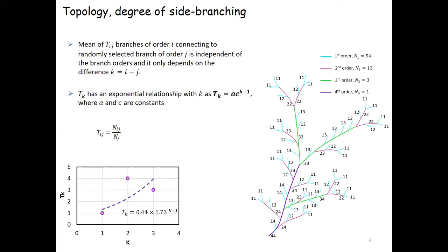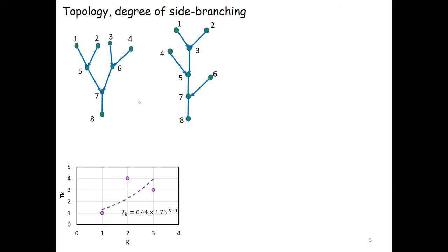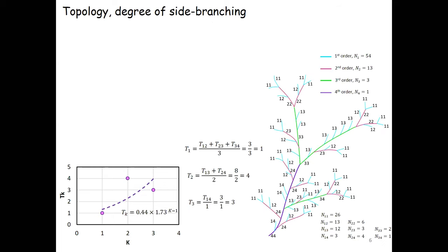If we consider two different simple networks—one schematic fully branched network and one with maximum possible side branching—the C value for the fully branched channel network is zero, whereas for the side branched network it is higher. For this particular schematic river network, the computed C value is 1.73.